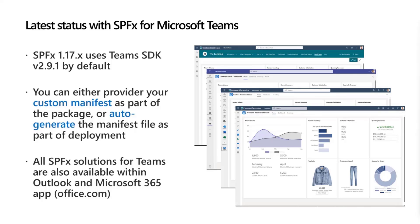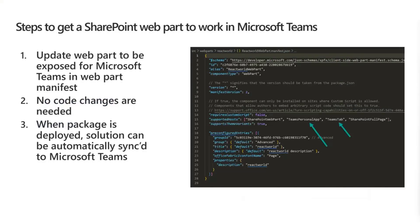All SharePoint Framework solutions for Microsoft Teams are also available within Outlook and Microsoft 365 apps, which is incredibly cool. If you have an existing web part used in SharePoint Online that you'd like exposed in Microsoft Teams, the only thing you need to do is update the supported host value in the web part manifest JSON file — add Teams personal app or Teams tab — repackage, deploy to the app catalog, and you're done. No additional code changes needed. That solution magically becomes available in production mode in Microsoft Teams, without the complexity of managing authentication and hosting yourself.